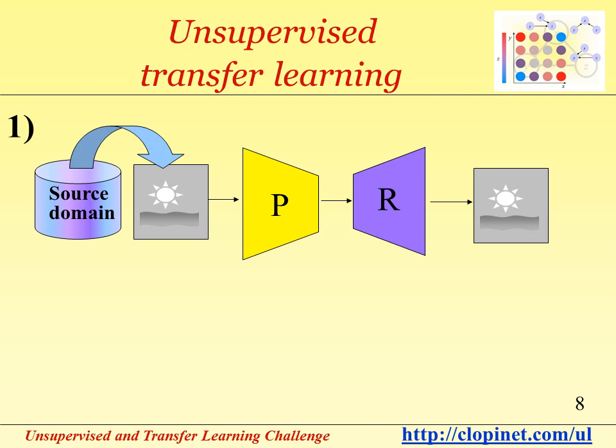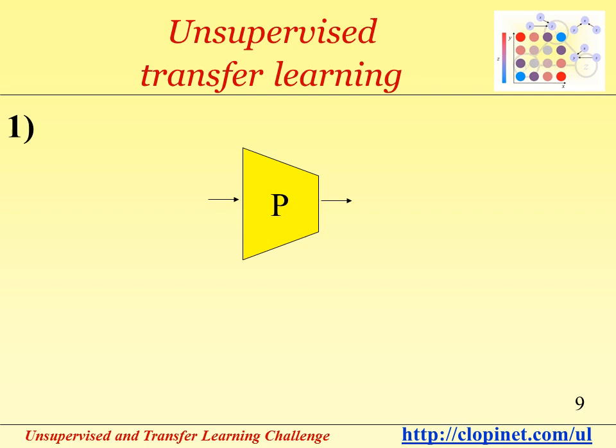On this slide, we are showing a classical setup for training machines with unsupervised learning. This would be the first step of learning in our transfer learning process. Using data from a source domain, we input it to a learning machine that has two modules: the module P, the preprocessor, and a module R, the reconstructor. We're seeking to reproduce at the output of the learning machine the input of the learning machine, and what really interests us is the inner representation produced by the preprocessor.